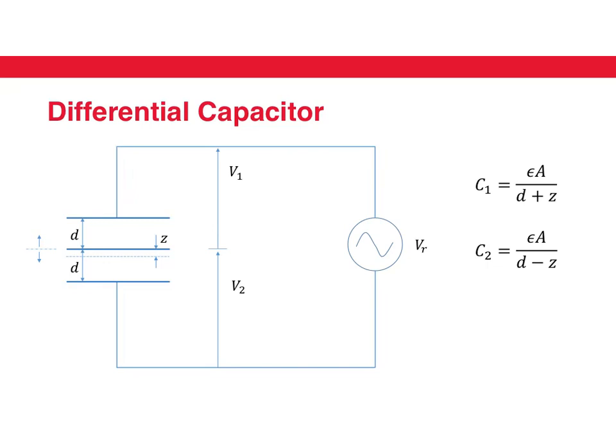For example, in this case, you have an arrangement where there are two capacitors. One capacitor is formed by these two plates, and another capacitor is formed by this plate and this plate. The center plate is common between the two capacitors.